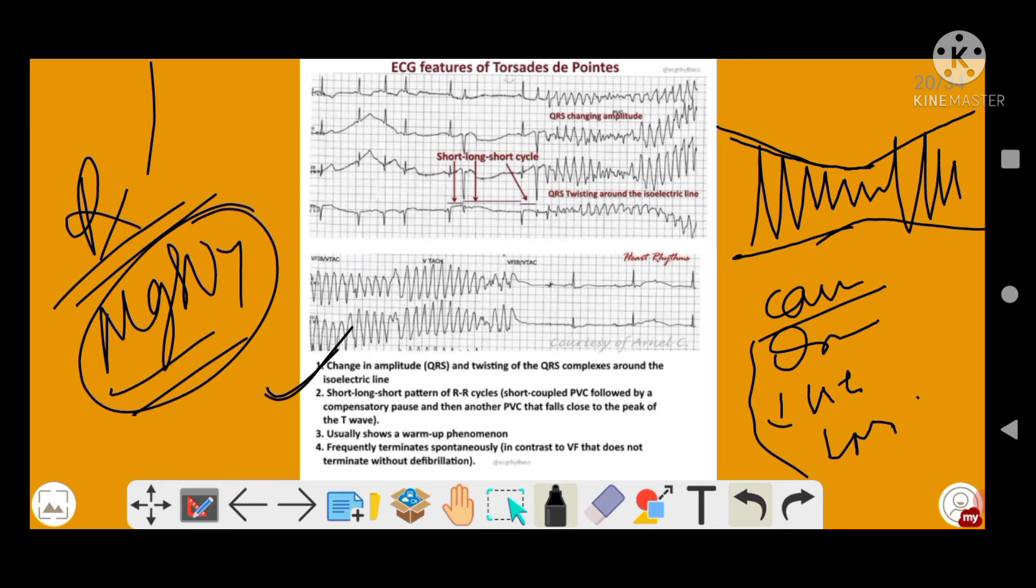Now, short-long-short pattern of the RR cycles, as I mentioned. And usually there is a warm-up phenomenon, and frequently it terminates spontaneously. Anyway, the first two being the characteristic of your torsades de pointes.